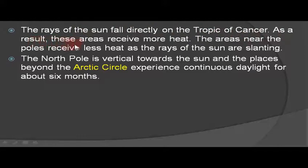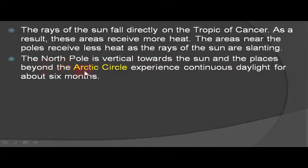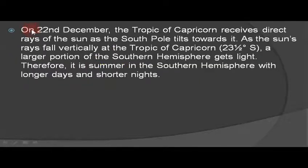On 21st June, the rays of the sun fall directly on the Tropic of Cancer. As a result, these areas receive more heat. The areas near the poles receive less heat as the rays of the sun are slanting. The North Pole is tilted towards the sun and the places beyond the Arctic Circle experience continuous daylight for about six months.